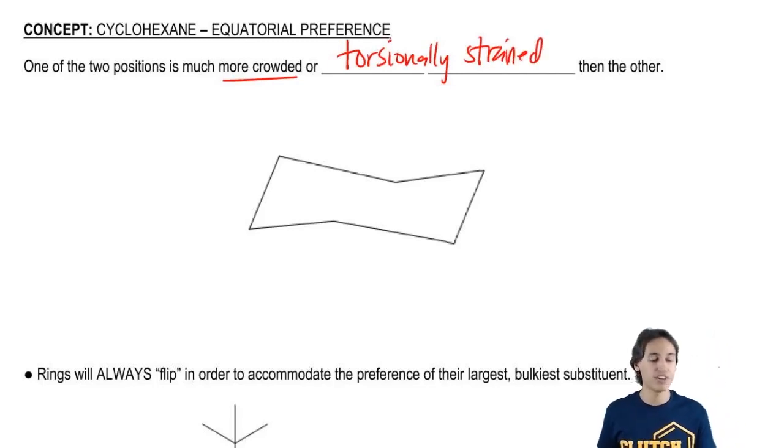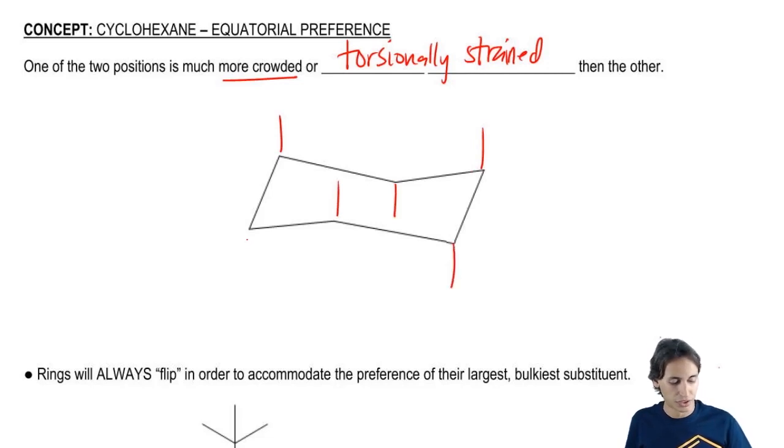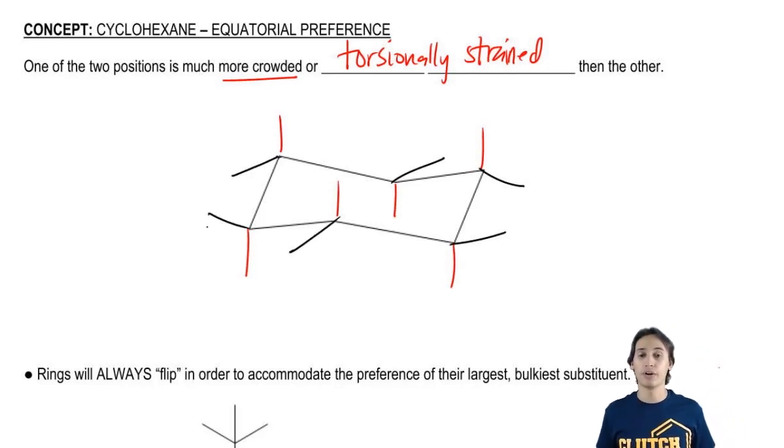Now usually if you just have hydrogens in there, it's not a big deal. But if you start adding bulkier groups, it's actually going to affect it. So let's just look at the different positions. Remember we have our axial positions that are going straight up and down with the corners, and we have our equatorial positions going slightly opposite.